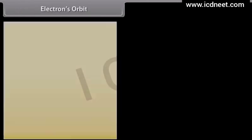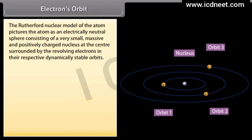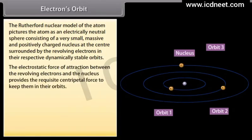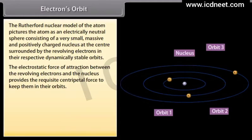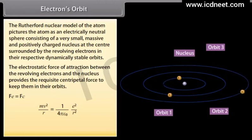The Rutherford nuclear model pictures the atom as an electrically neutral sphere consisting of a very small, massive, and positively charged nucleus at the center, surrounded by revolving electrons in dynamically stable orbits. The electrostatic force of attraction between the revolving electrons and the nucleus provides the requisite centripetal force to keep them in their orbits: Fe = Fc. Putting their respective values: mv²/r = (1/4πε₀) × e²/r².